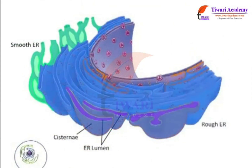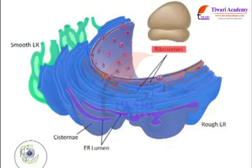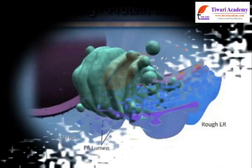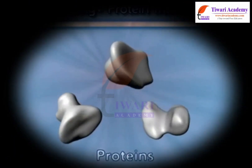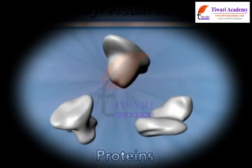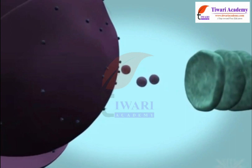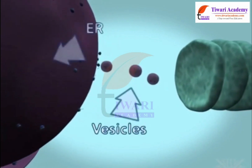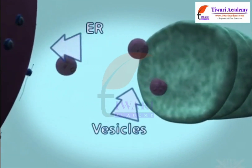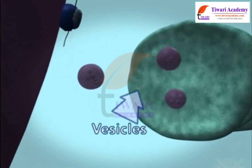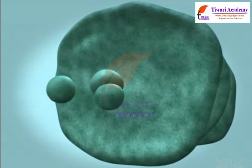The rough endoplasmic reticulum (RER) has ribosomes attached to its surface, so it looks rough under an electron microscope. Ribosomes are the site of protein manufacture, so the RER is also helpful in protein synthesis and its transport inside the cell.